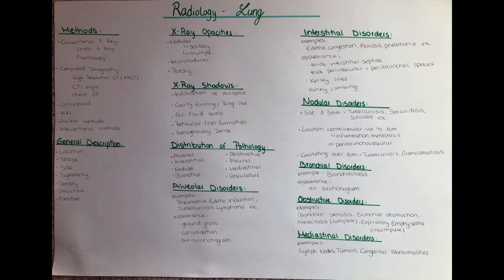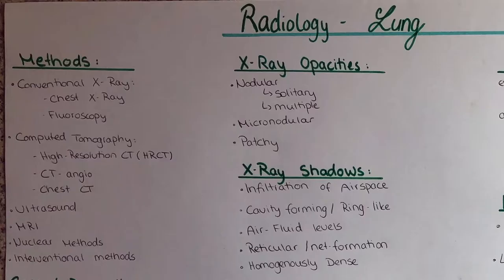First of all, it's important to consider the methods that are possible to use for a lung investigation. That's first of all the conventional x-ray, in this case a chest x-ray, or also a fluoroscopy — that's kind of like an x-ray movie because you get continuous real-time moving images. Then a CT or computer tomography is also possible to obtain. There are different variations of computer tomography, for example the high resolution CT, the CT angio, and the chest CT.